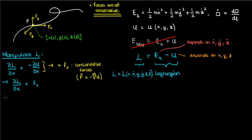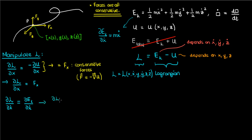The next derivative we'll take is the partial of L with respect to x-dot, which is the same as writing the partial of ek with respect to x-dot, because ek is the only term in the Lagrangian that actually depends on x-dot. We can see that the partial of ek with respect to x-dot is just m times x-dot, which is just the momentum in the x-direction.